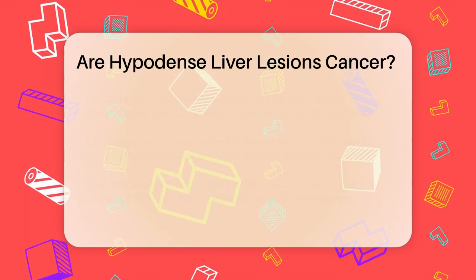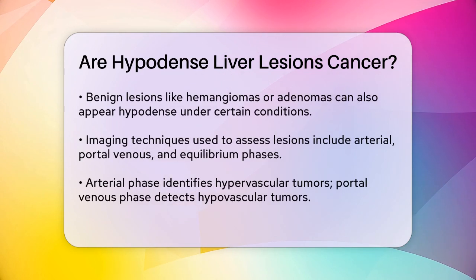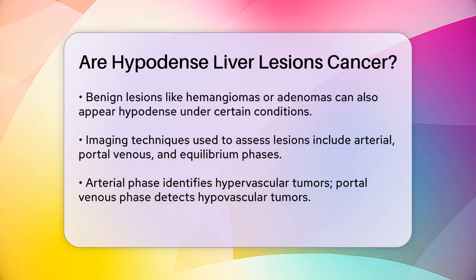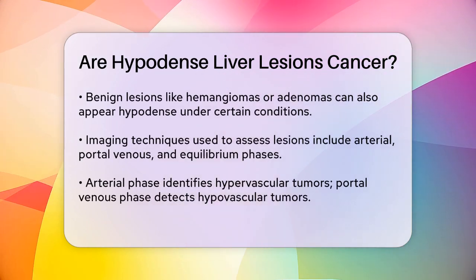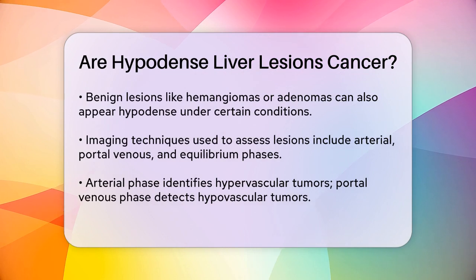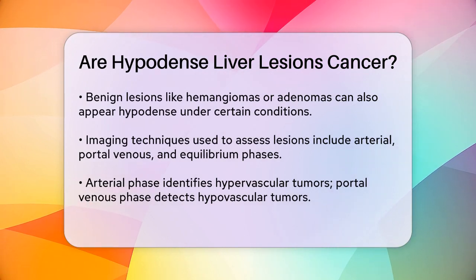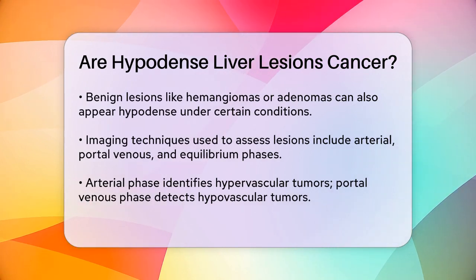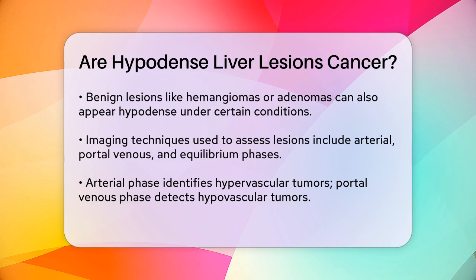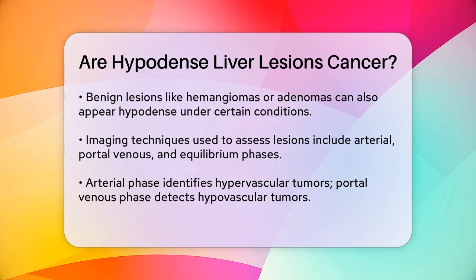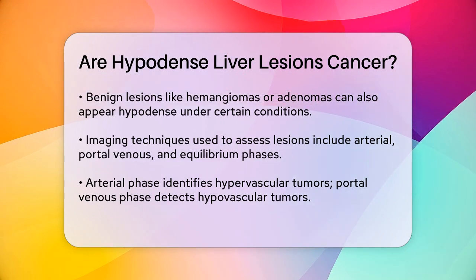Hepatocellular carcinoma, or HCC, while usually hypervascular, about 10% of cases can be hypovascular and appear hypodense. HCCs often show a fast washout in the equilibrium phase, which can help differentiate them from benign lesions.